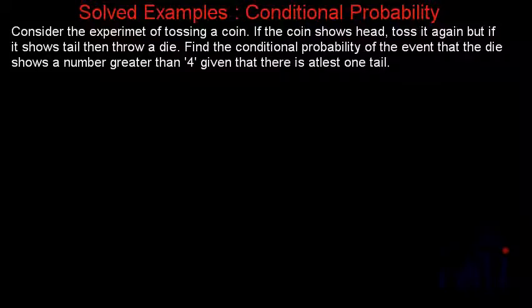Here we have a second example based on conditional probability. The problem statement says: consider the experiment of tossing a coin. If the coin shows head, toss it again. But if it shows tail, then throw a die. Find the conditional probability of the event that the die shows a number greater than 4, given that there is at least one tail.